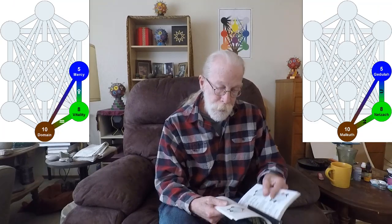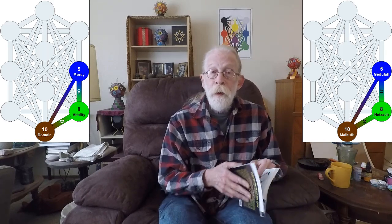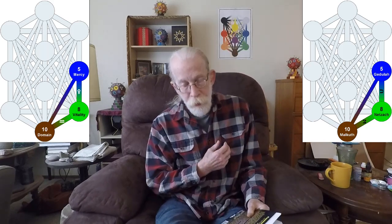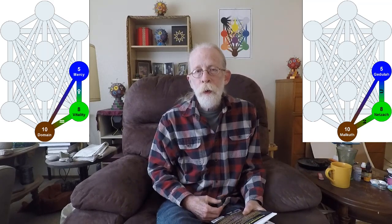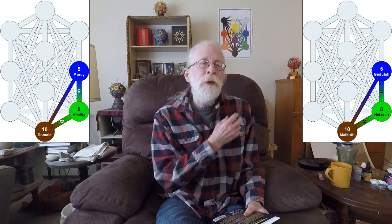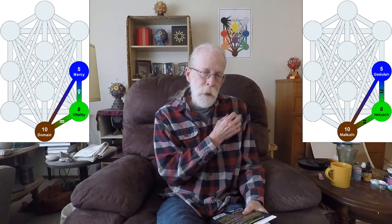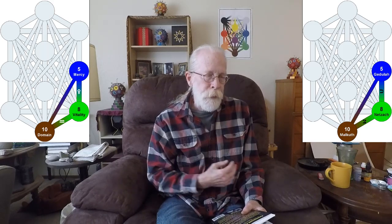Now our first triangle, gate number 150, begins in Netzach, follows Tzadi down to Malkuth, takes that hidden path from Malkuth up to Gedula, and follows Venus down to Netzach, and then back around.